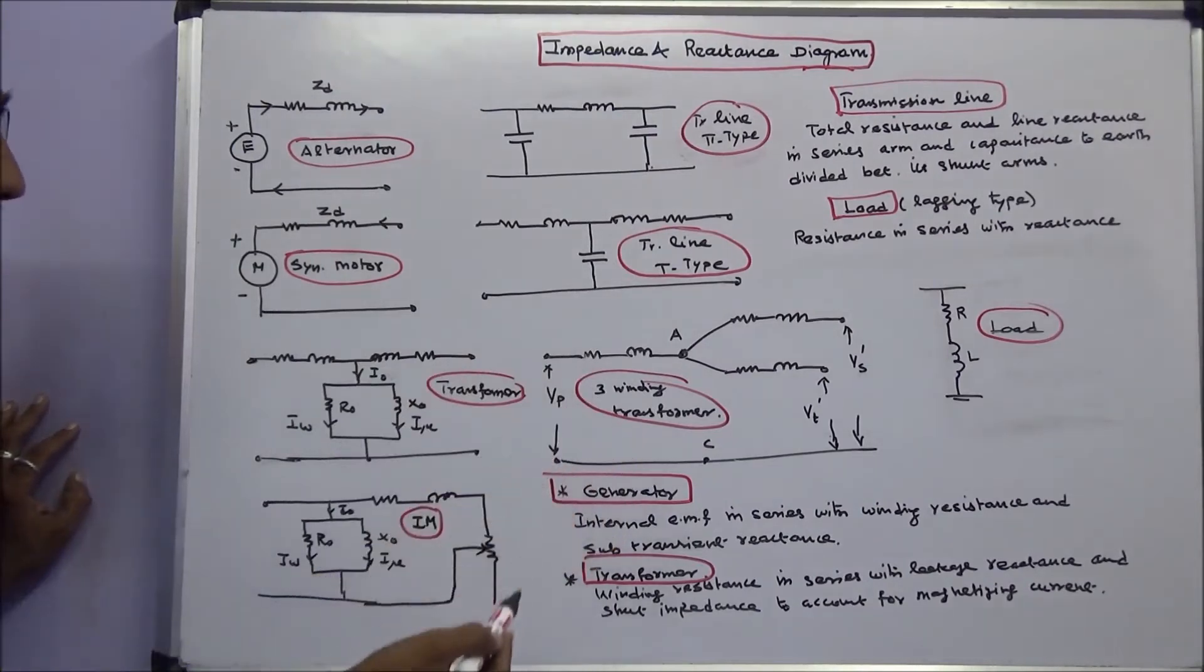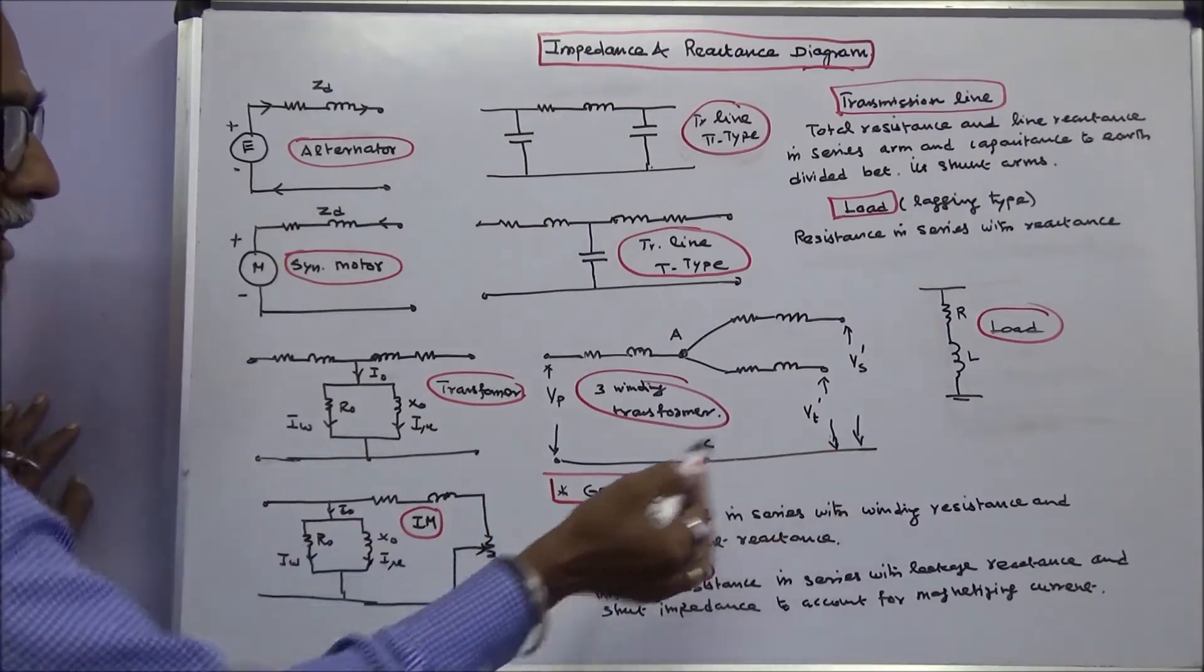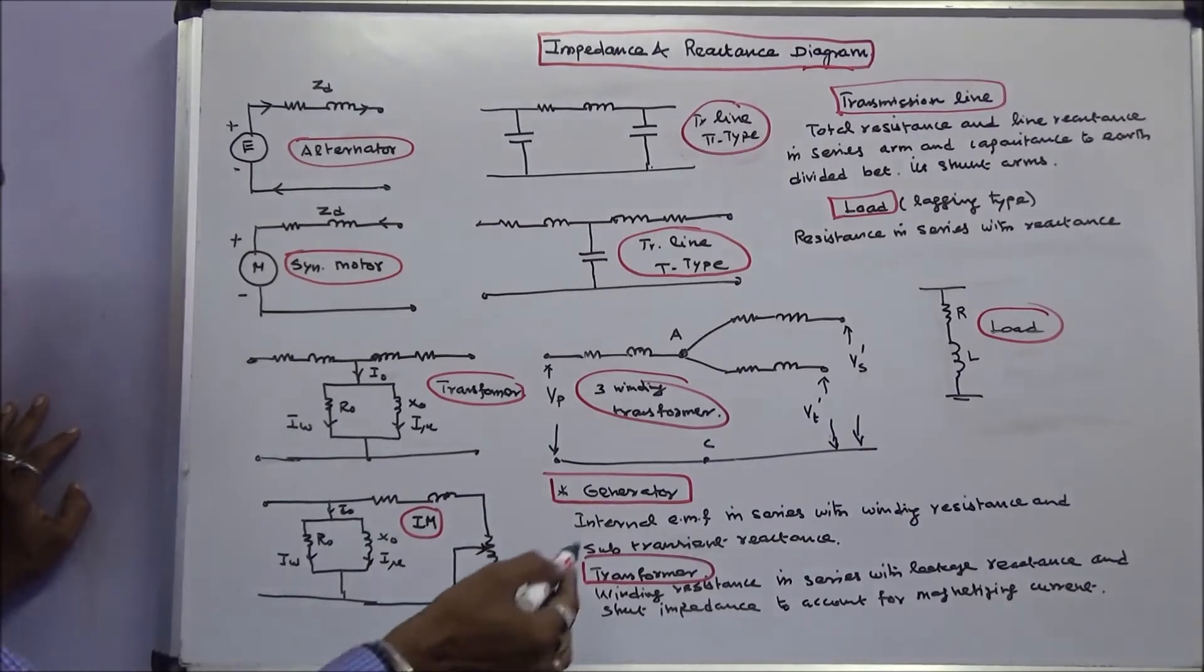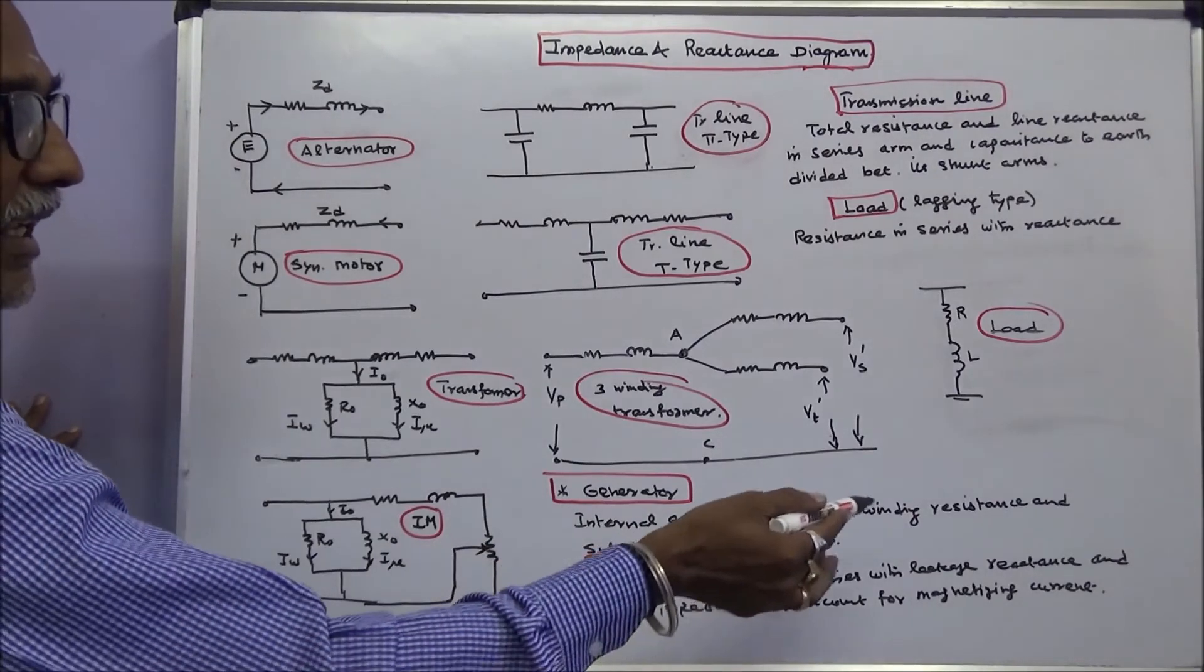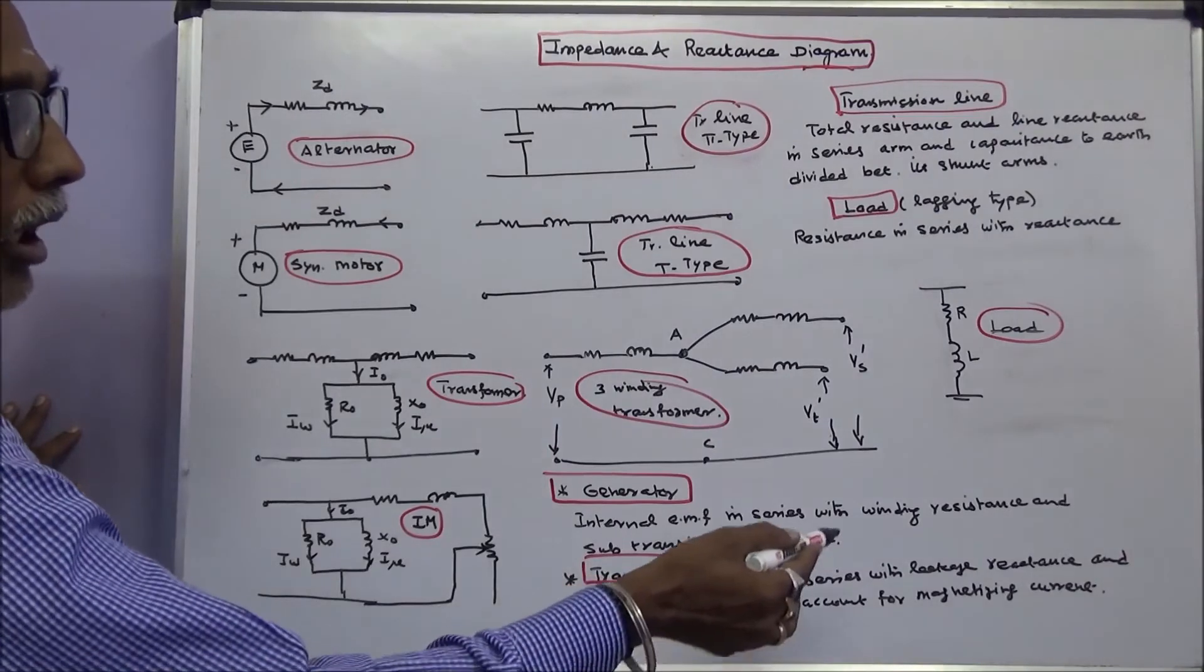For a generator, internal EMF E in series with the winding resistance and sub-transient reactance. In the case of transformer, winding resistance in series with the leakage reactance and shunt impedance to account for magnetizing current.